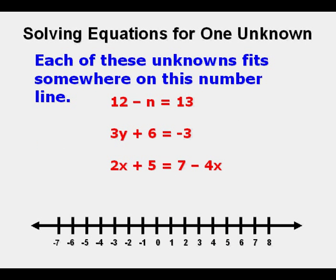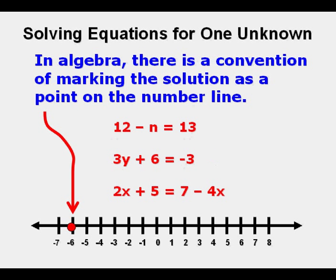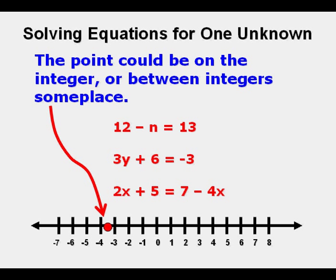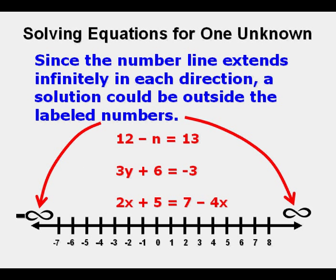Each of these unknowns fits somewhere on this number line for all three of these equations. In algebra there is a convention of marking the solution as a point on the number line. The point could be on the integer or between integers someplace. Since the number line extends infinitely in each direction to the left negative infinity to the right positive infinity, a solution could be outside the labeled numbers.